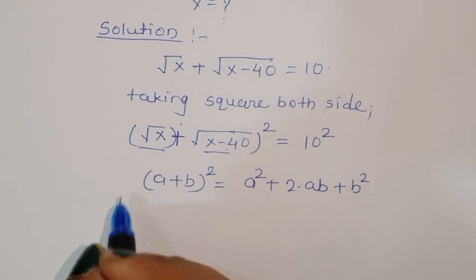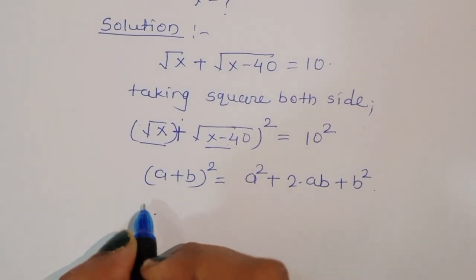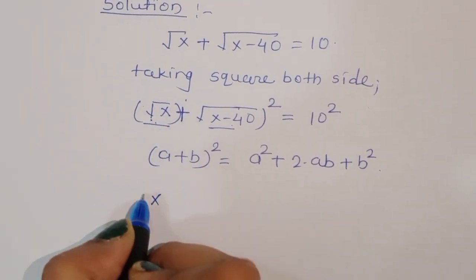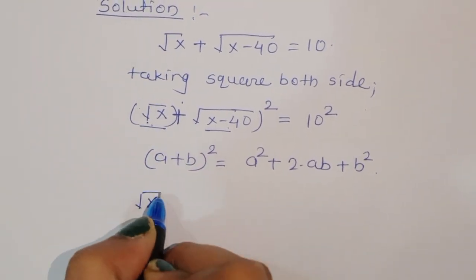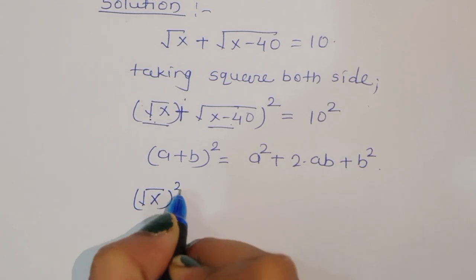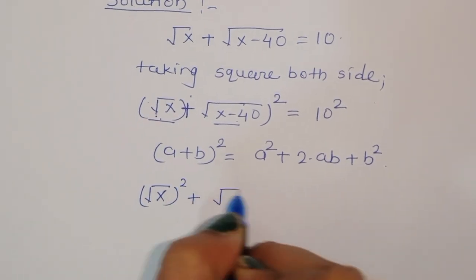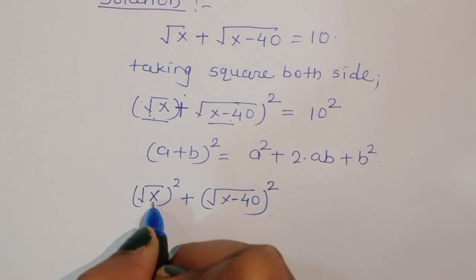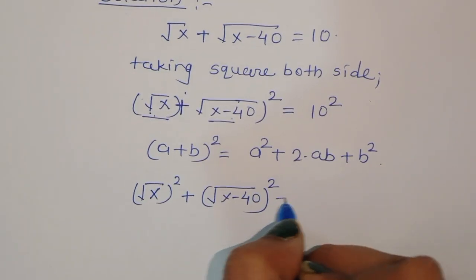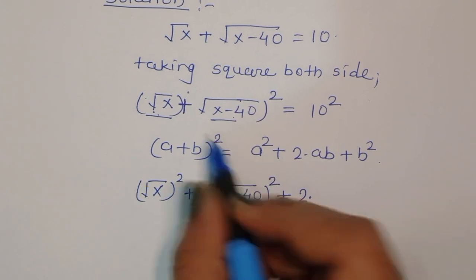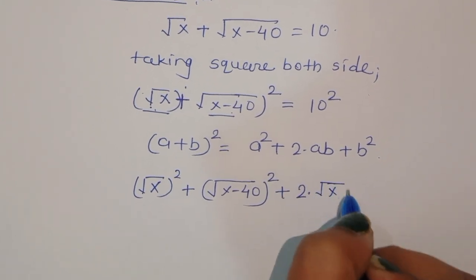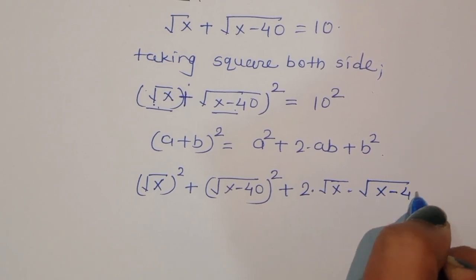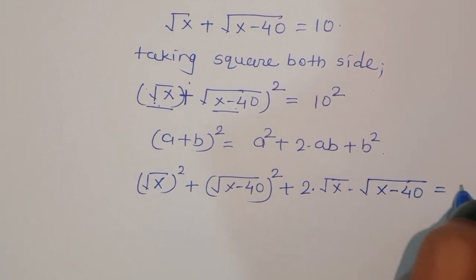So we can write this as: square root of x whole square, plus square root of x minus 40 whole square, plus 2 times square root of x times square root of x minus 40, equal to 100.